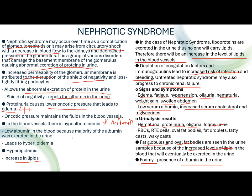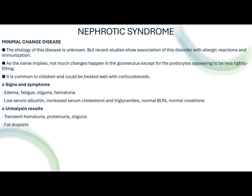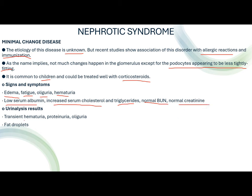Minimal change disease is one of the nephrotic syndromes with unknown etiology, usually associated with allergic reactions and immunization. Not much change happens in the glomerulus except for the podocytes appearing less tightly fitting. It is common in children and can be treated well with corticosteroids. Signs and symptoms include edema, fatigue, oliguria, hematuria, low serum albumin, increased serum cholesterol, triglycerides, and normal BUN and creatinine. Urinalysis: transient hematuria, proteinuria, oliguria, and fat droplets.